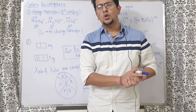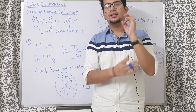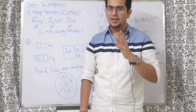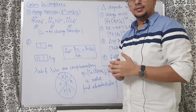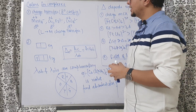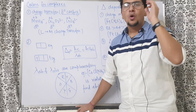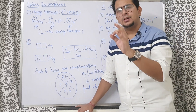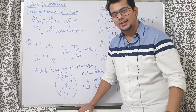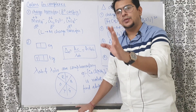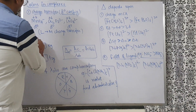Let us enter into a very colorful topic — we are going to discuss color in complex compounds. There are two explanations for color in complex compounds: one is charge transfer, and a simple trick is that when you have a d0 configuration, you get charge transfer. Otherwise, the second reason applies, which is known as d-d transition.